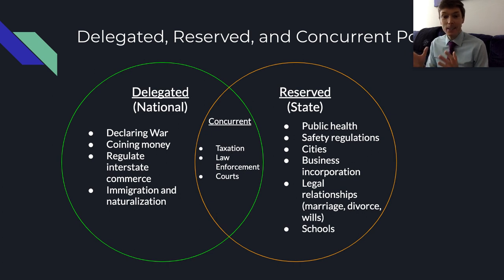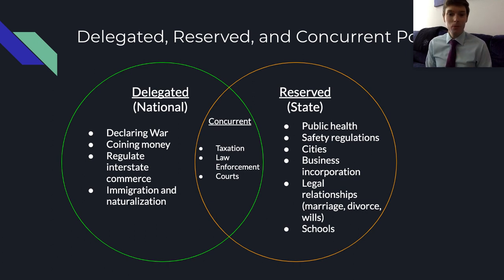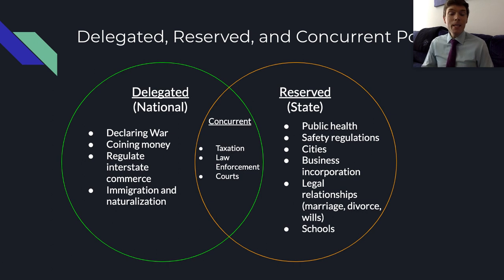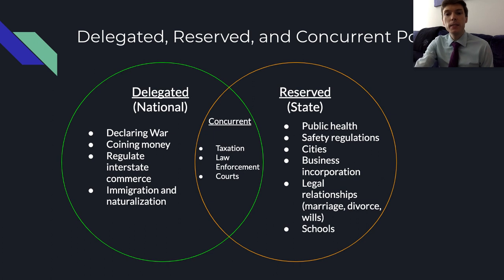Concurrent powers are those that both levels of government can exercise. Taxation is a good example — you pay federal income tax, state income tax, and in some instances local income tax. Law enforcement is another: we have federal law enforcement for federal laws, and state and local law enforcement for state laws and local ordinances. They also have different court systems — we have the federal judiciary and state and local courts.